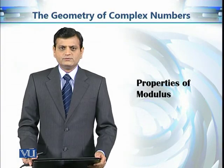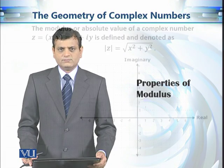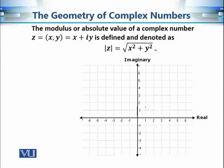Now we are going to see some properties of the modulus of a complex number. Recall that the modulus of a complex number can be defined in the following way. This is z, which is a complex number with coordinates (x, y). We can associate the following vector with this complex number.